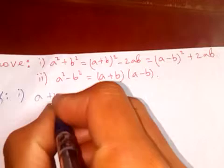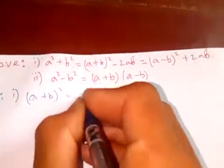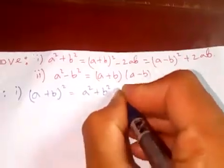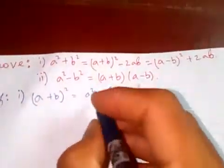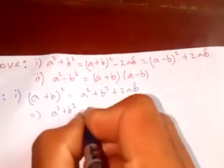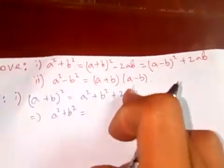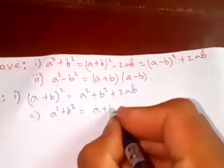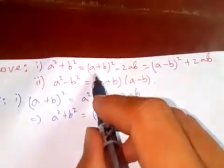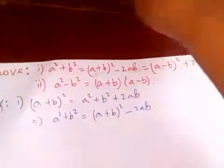We know that (a+b)² = a² + b² + 2ab. If we just simplify for a² + b², let me keep it here and transfer this term. This gives us a² + b² = (a+b)² - 2ab, which is this one, and this is one.